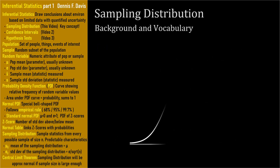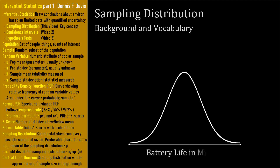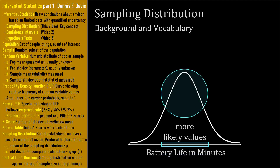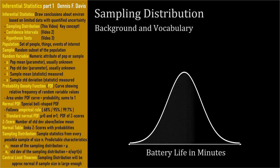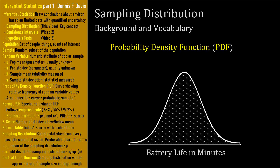We can plot random variables on a graph. The horizontal axis denotes the values for the random variable — working battery life in minutes — with lower numbers denoting shorter lives to the left and higher numbers denoting longer lives to the right. The curve shows the relative likelihood of encountering different random variable values. The curve is called a probability density function, or PDF — not the document format PDF, completely different PDF.